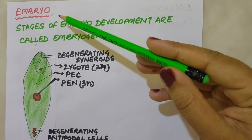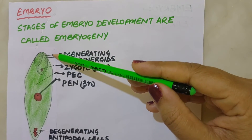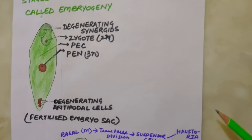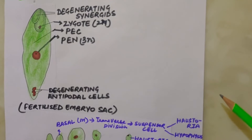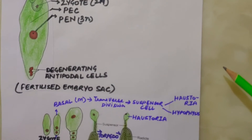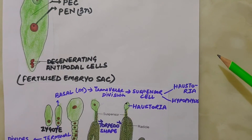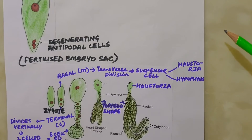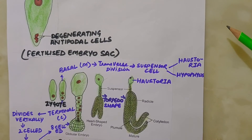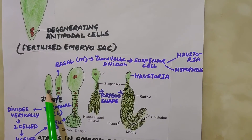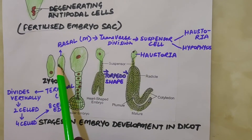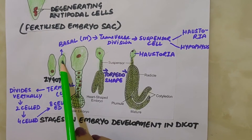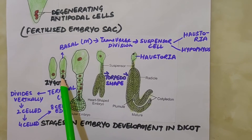Now let's see the development of the embryo. Embryo develops at the micropylar end of the embryo sac where the zygote is situated. Most zygotes divide only after a certain amount of endosperm is formed — this is an adaptation to provide assured nutrition to the developing embryo. Though seeds differ greatly, the early stages of embryo development (embryogeny) are similar in both monocots and dicots. Under favorable conditions, the zygote divides mitotically to form two cells: the basal cell at the micropylar end and the terminal cell at the chalazal end.